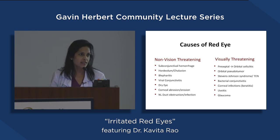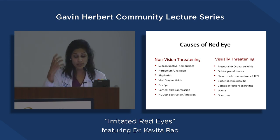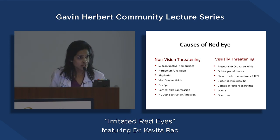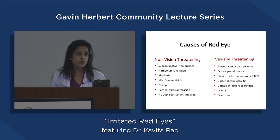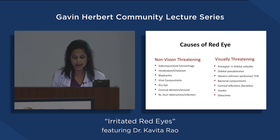There's also something called orbital pseudotumor — inflammation of where the eye itself sits. Stevens-Johnson syndrome is a reaction from certain medications. Bacterial conjunctivitis and infections from the surface of the eye, and also uveitis — inflammation inside the eye — and glaucoma can cause a red eye as well.